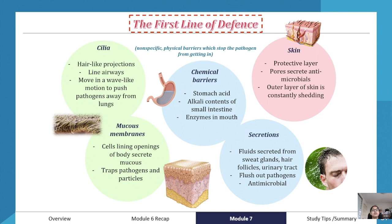The innate immunity has the first line of defense and the second line of defense, and it is non-specific — it doesn't discriminate between whether it's a virus or other types of pathogens, and it doesn't discriminate based on the transmission of the disease. It is non-specific and it is fast.